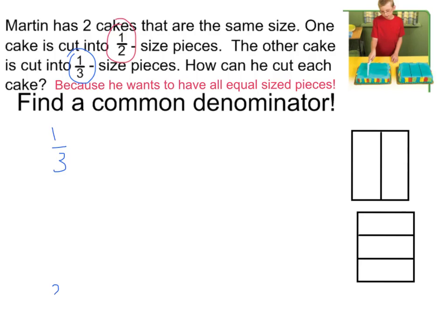My denominator is 3: 3, 6, 9, 12, and I'll stop at 15. Now let's list my multiples of one-half: 2, 4, 6. I can stop right there, because right away I see 6 as my common denominator.